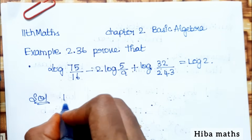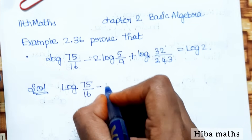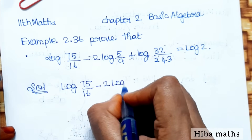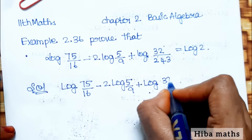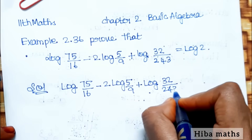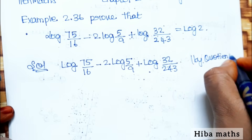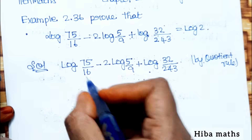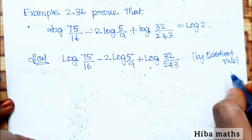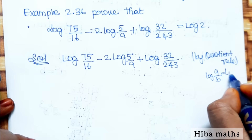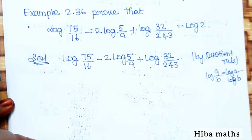First, the LHS part of the solution: log(75/16) minus 2·log(5/9) plus log(32/243). We apply the quotient rule: log(A/B) equals log A minus log B.